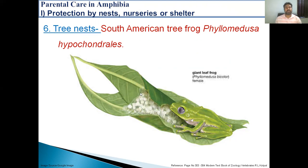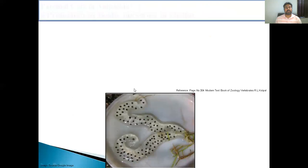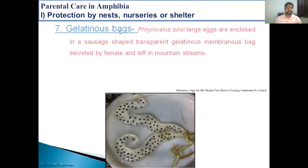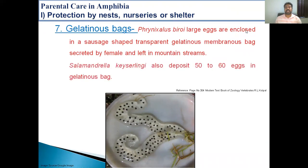The next type of nest is the gelatinous bag. The example is Phrynelexillus beroi, where large eggs are enclosed in a sausage-shaped, transparent gelatinous membrane bag which is left in the water body. Similarly, Salamandra also deposits 50 to 60 eggs in such type of gelatinous bags.